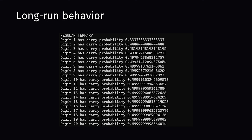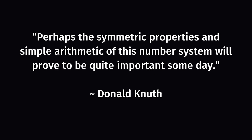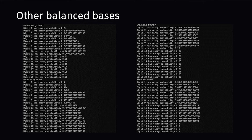Everyone's favorite computer scientist Donald Knuth once wrote, quote, 'perhaps the symmetric properties and simple arithmetic of this number system will prove to be quite important someday.' Just for a little bit of fun, I tried working out these probabilities for other balanced bases and their non-balanced counterparts. They all converge to the same numbers as ternary — just the larger the base, the faster the convergence actually happens. This makes sense, as when you add more digits, the one or negative one that you carry becomes less significant.